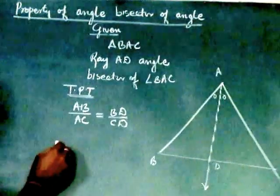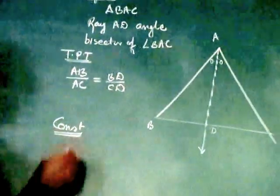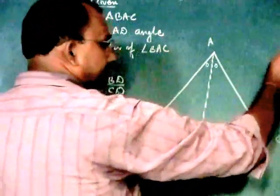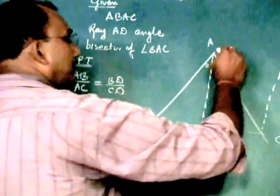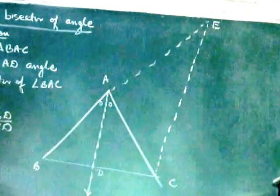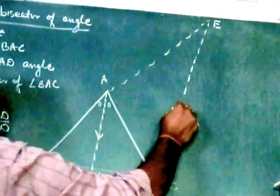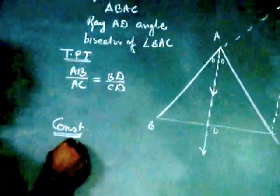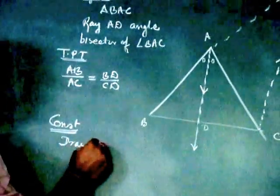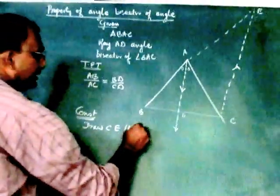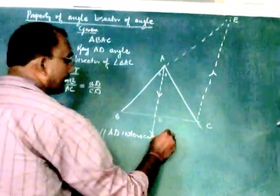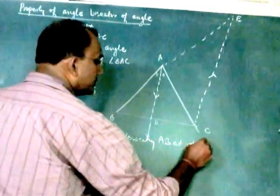Construction: We have to draw a line parallel to angle bisector, intersecting AB at point E. This ray AD should be parallel to CE. So in construction we will write: Draw CE parallel to AD intersecting AB at point E.